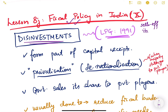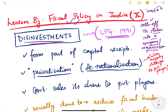Hello friends, let us continue fiscal policy in this video. In this particular video, we will discuss a very important topic known as disinvestments. Disinvestment basically means that the government sells off its stakes in a company or any organization.